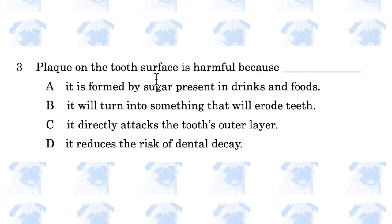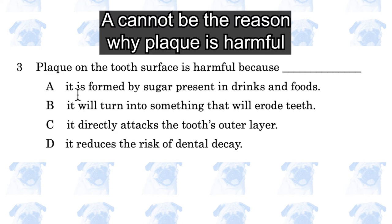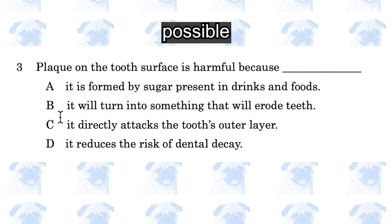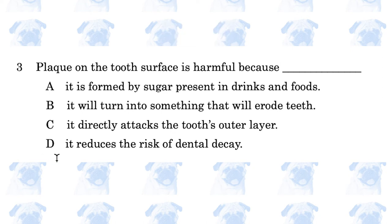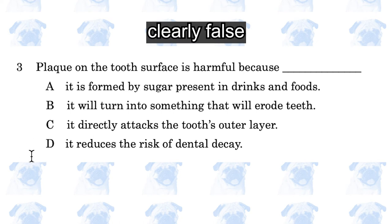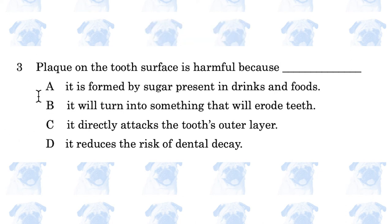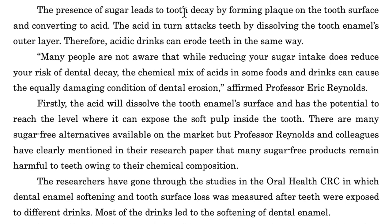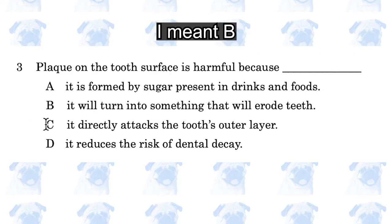Number 3: The plaque on the tooth surface is harmful because — A: it is formed by sugar present in drinks and foods; B: it will turn into something that will erode teeth; C: it directly attacks the tooth's outer layer; D: it reduces the risk of dental decay. D is obviously wrong — if it reduces risk, it is not harmful. The passage states the presence of sugar leads to tooth decay by forming plaque and converting to acid. The acid attacks teeth by dissolving the tooth enamel's outer layer. So plaque turns into acid and acid erodes teeth — the answer is B.